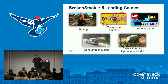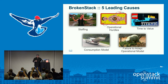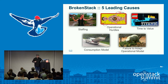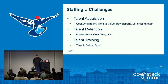We're going to break things out into the five leading causes of broken stacks or OpenStack private cloud failures. In our experience, it comes down to: staffing issues or challenges, operational hurdles, time to value, choosing the right consumption model, and failure to adapt an operational model.